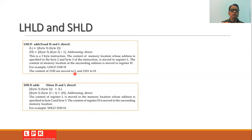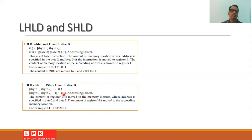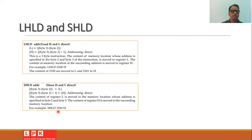SHLD address — store H and L direct — moves the content of register L to the memory location specified in byte 2 and byte 3, and the content of register H to the next (succeeding) memory location. The addressing used is direct. For example, SHLD 3520H moves the content of L to location 3520 and the content of H to location 3521.